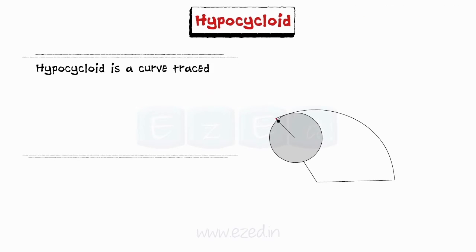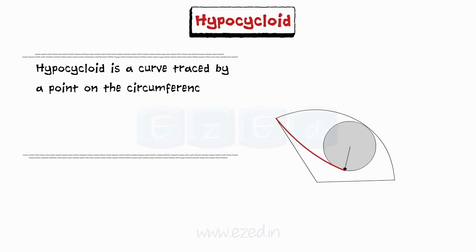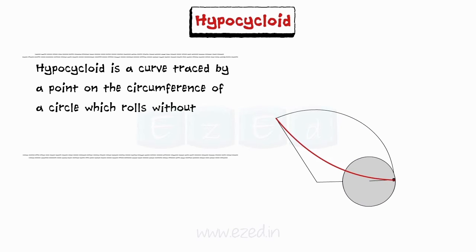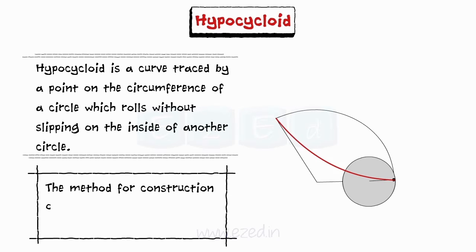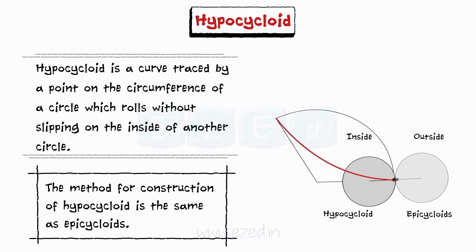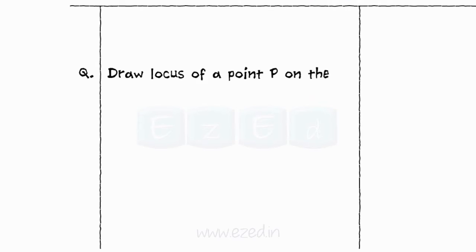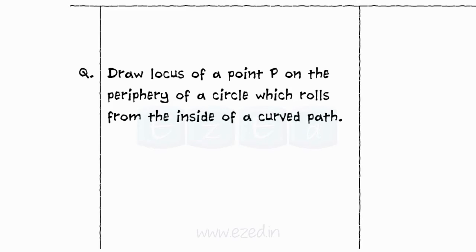The next curve is hypocycloid. A hypocycloid is a curve traced by a point on the circumference of a circle, which rolls without slipping on the inside of another circle. The method for constructing a hypocycloid is the same as for epicycloids. The center C of the generating circle is inside the directing circle. Draw the locus of a point P on the periphery of a circle which rolls from the inside of a curved path.